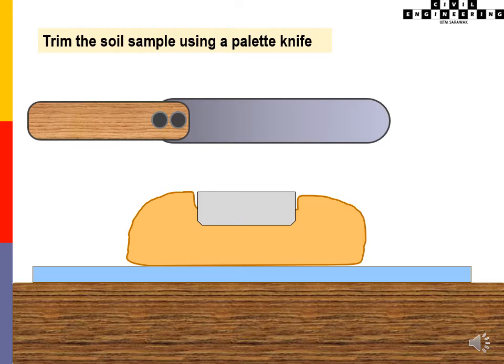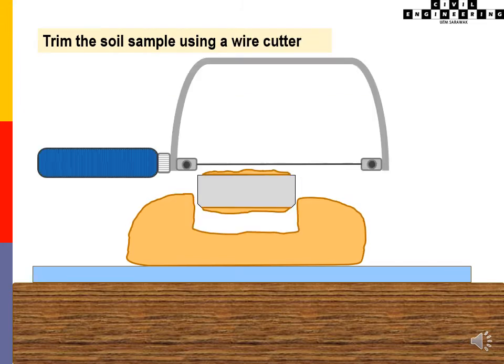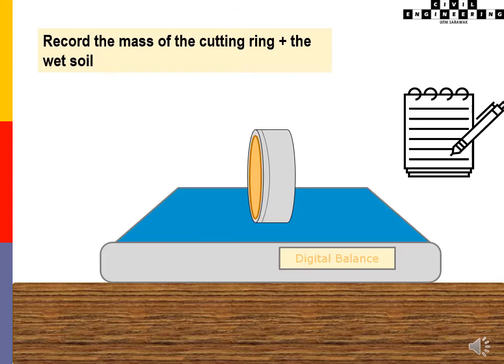Trim the soil sample using a pellet knife and a wire cutter. Record the mass of the cutting ring with the wet soil.